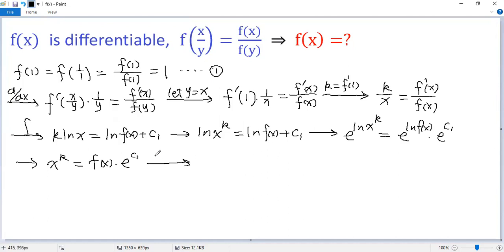Both sides times e to the power of negative c1. So we write f(x) first. So f(x) equals e to the power of negative c1 times x to the power of k. That's just a constant. So we denote that c, so we denote that c x to the power of k.